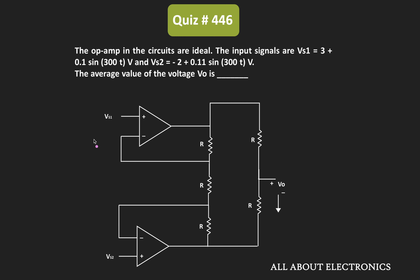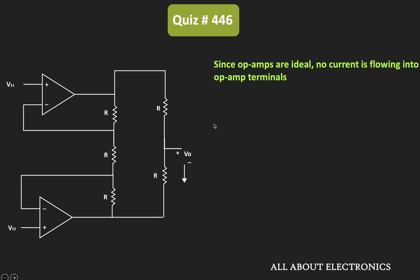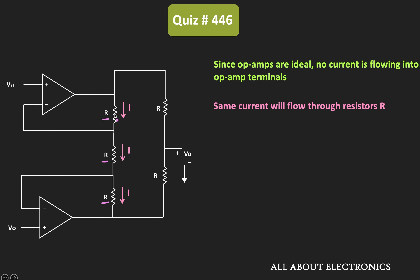Here, VS1 and VS2 are the inputs to the op-amp circuit, and we have been asked to find the average value of the output voltage. The given op-amps are ideal op-amps, so no current is flowing into the op-amp terminals. Therefore, through all three resistors, the same current will flow. Let's say the current through all three resistors is equal to I.